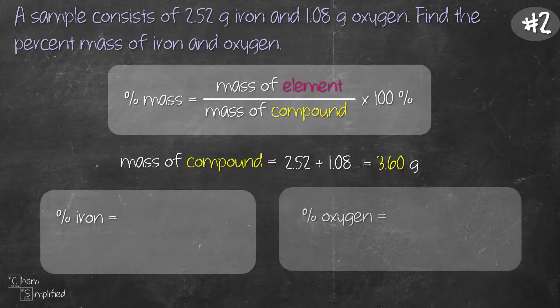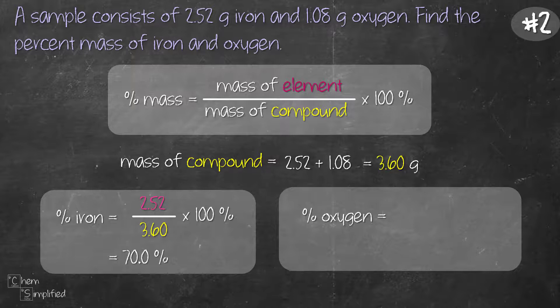To find the percent iron we take the mass of iron and divide by the mass of compound and that works out to be 70.0 percent. And then we do the same thing for percent oxygen except now we take the mass of oxygen which is 1.08 divide by 3.6 times 100 and we get 30 percent.